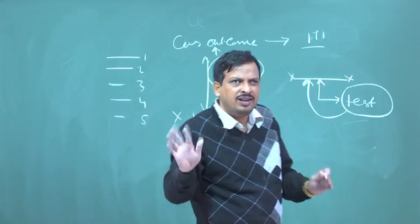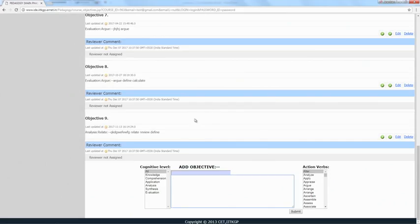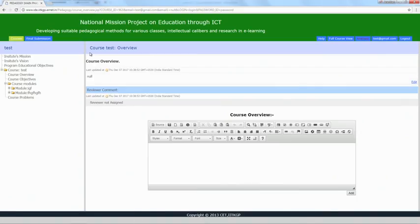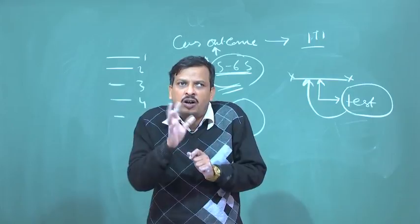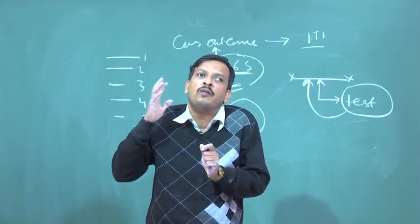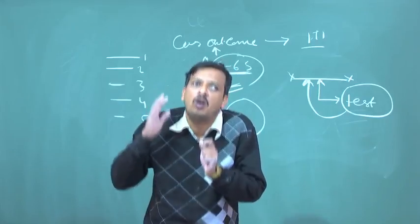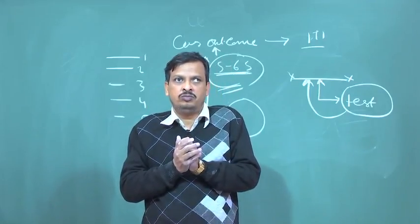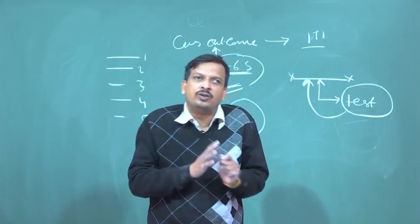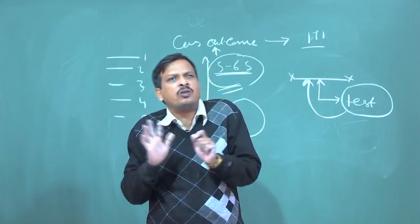How to write outcomes using action verbs and similar things, I will describe later. Then what I am doing — I am entering the course overview. A course overview is not only the coverage of the course; it also contains the motivational part of the course. As a teacher, I am developing this document for whatever course I am teaching.